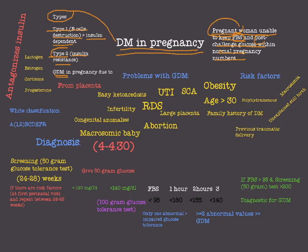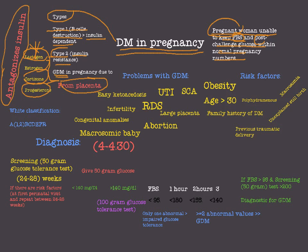The third type is gestational DM, which is the focus of this lecture. The cause of gestational DM is placental hormones. The placenta secretes hormones such as lactogen, estrogen, cortisone, and progesterone. These hormones act as insulin antagonists — lactogen being the most important — predisposing the mother to diabetes by creating insulin resistance.